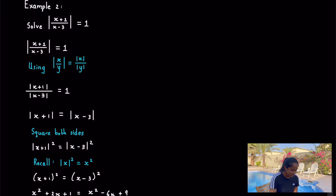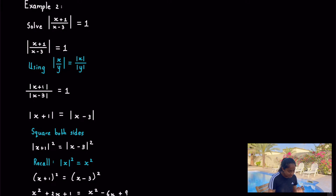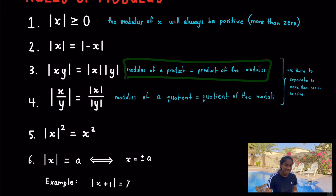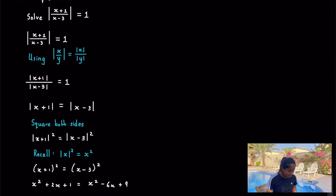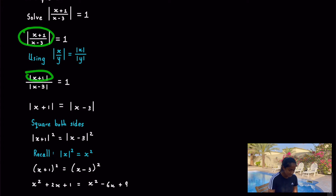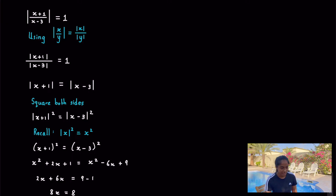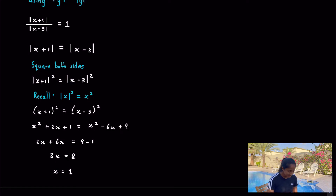Example 2: use Rules 3 and 4 to simplify before solving. Recall Rule 3 — the modulus of a product equals the product of the moduli. Split the expression into two separate moduli. Since it equals 1, move one modulus to the other side; anything multiplied by 1 is itself. Then square both sides, just as in Example 1, and solve for x normally.